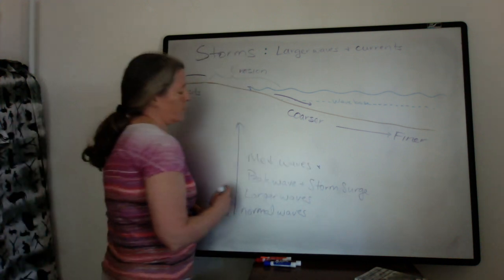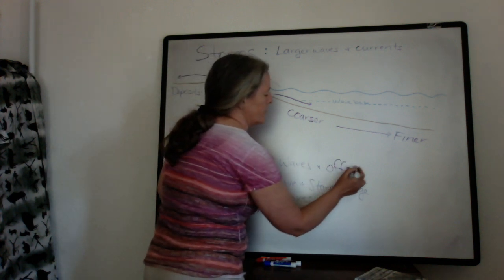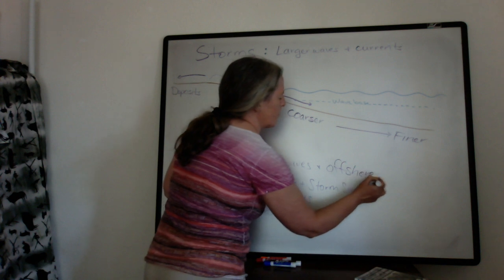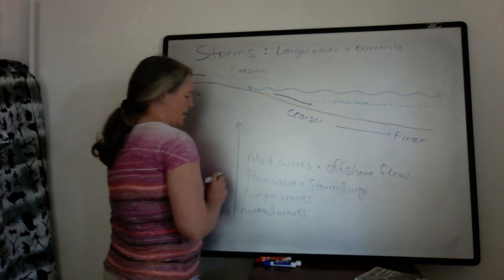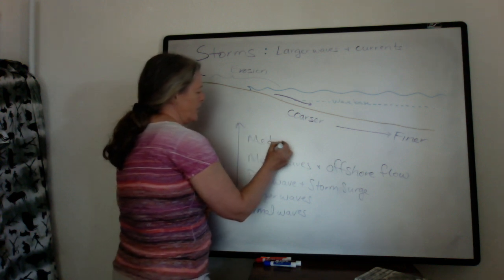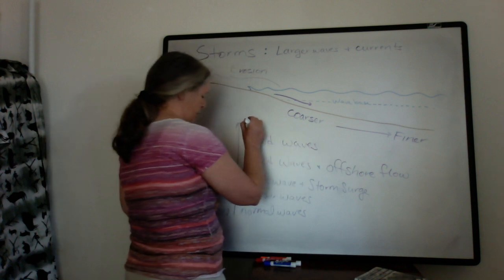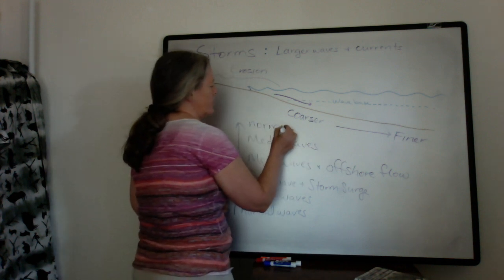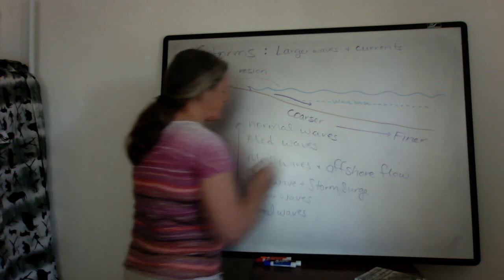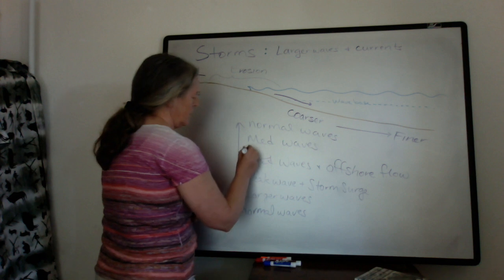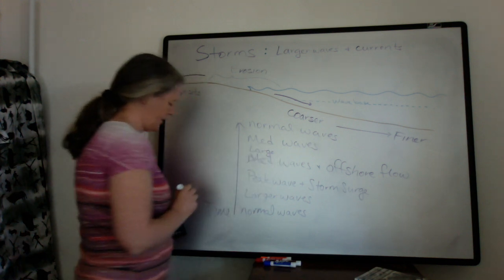This would be as the storm is moving away, so that is usually offshore flow. Then we have a continuation of medium waves, and then we go back to normal waves. They can decrease through time.